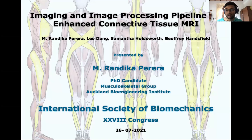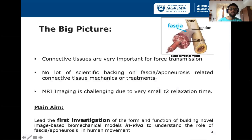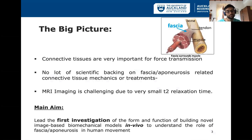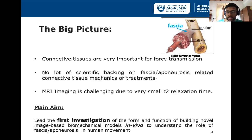Now, let's dive down a little bit more into my research work. Connective tissues are very important for force transmission of the body, and mainly it comprises tendons as well as thin tissues like aponeuroses and the fascia. Connective tissues are very hard to image using normal imaging modalities because of short T2 relaxation properties of the tissues themselves.